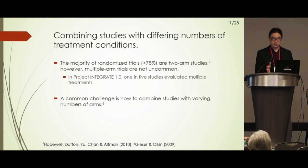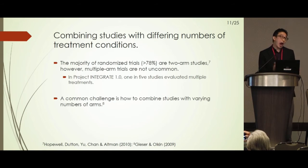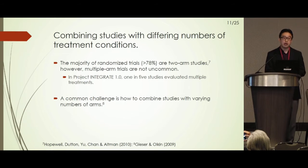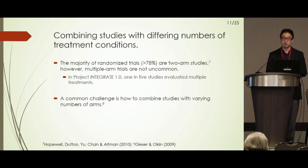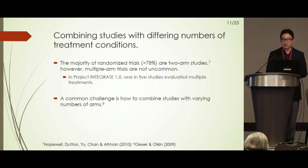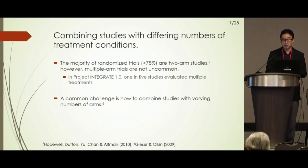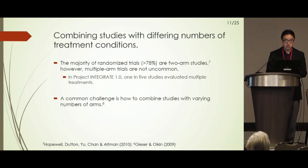Another decision point when embarking on meta-analysis — which applies to aggregate data meta-analysis as well — is the situation where you have both two-armed and multi-armed studies. More than three-quarters of studies are generally two-armed. In Project Integrate, about one in five evaluated multiple treatments, two or more. So this situation is actually relatively common.